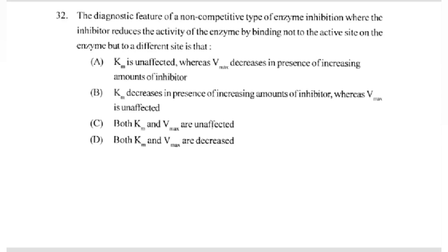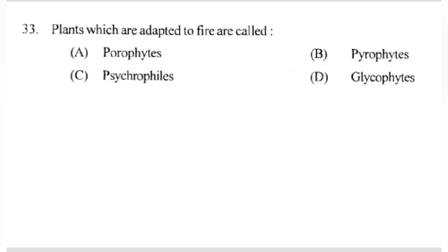Question number 32: The diagnostic feature of a non-competitive type of enzyme inhibition, where the inhibitor reduces the activity of the enzyme by binding not to the active site but to a different site, is that KM is unaffected, whereas Vmax decreases in presence of increasing amounts of inhibitors — A is the correct answer. Plants which are adapted to fire are called — answer B part: pyrophytes.